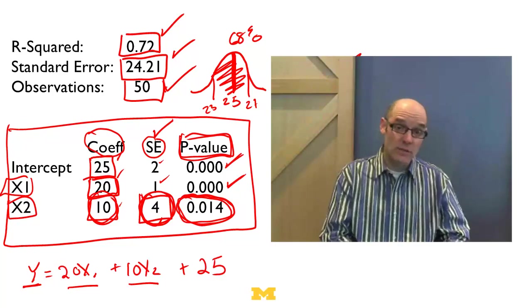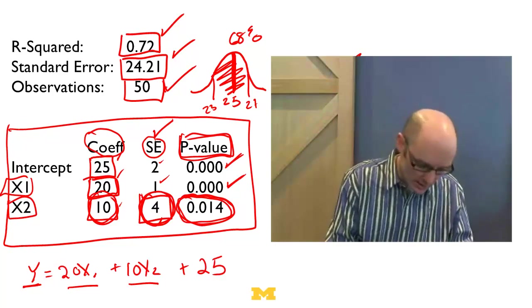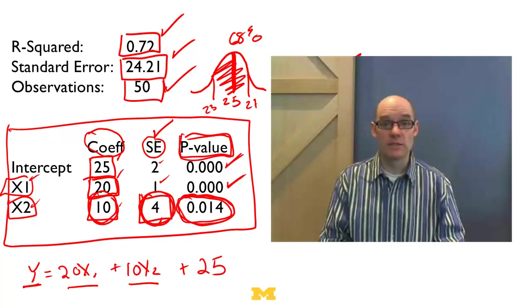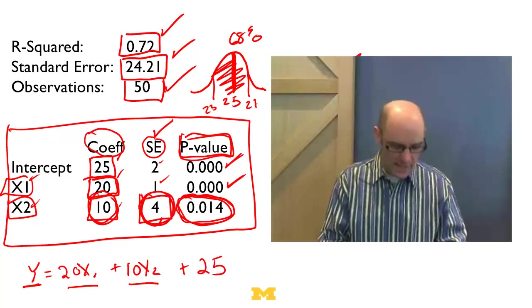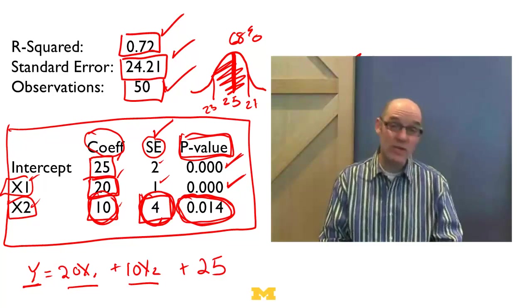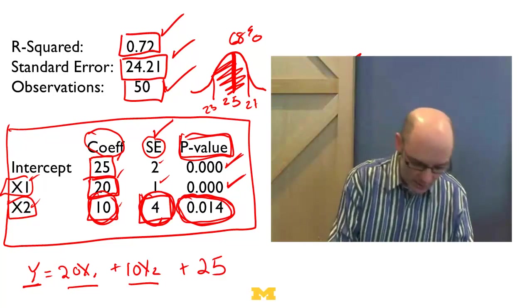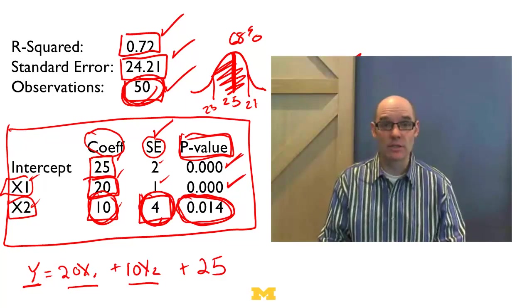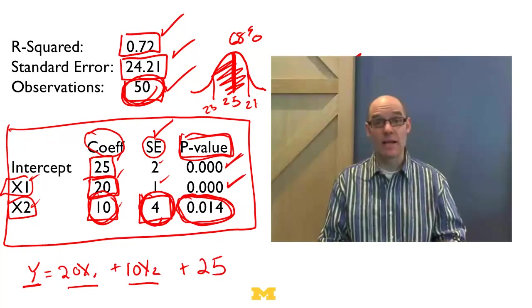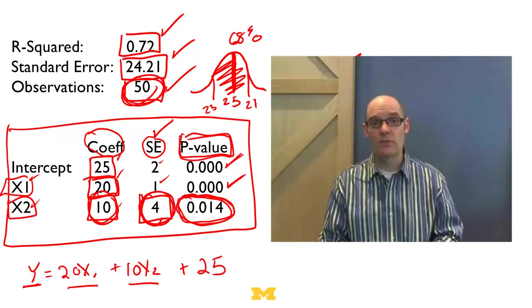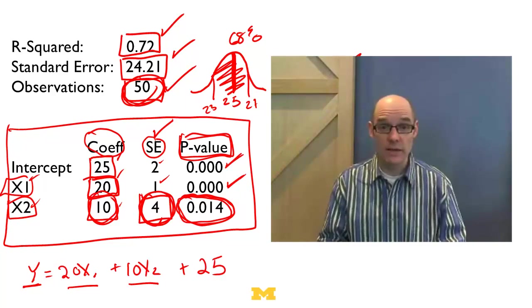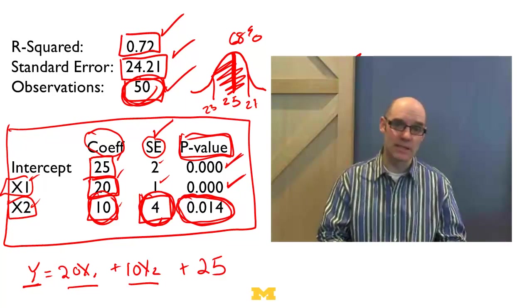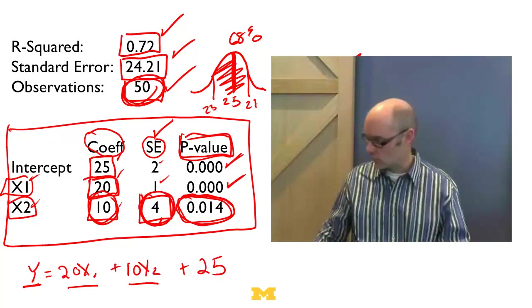So if this were, again, a regression of test scores on teacher quality and class size, what we could say is teacher quality definitely improves performance. And there's a lot of evidence that that's true. And we could say with class size, well, even though this study goes the wrong way, it's possible since we only have 50 data points, that maybe if we did another study, it could go in the opposite direction. And that's true as well. There's a lot of studies on class size that do in fact show that as the class size gets bigger, students do better, even though that's sort of counterintuitive. But there's more studies that show the opposite, that as the class size gets smaller, students do better.